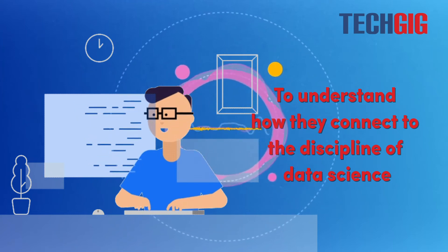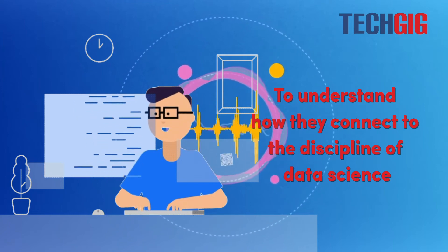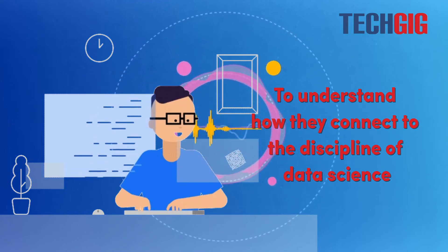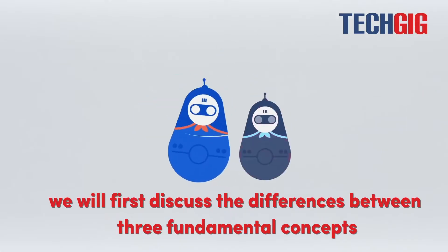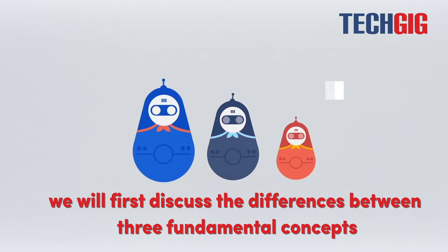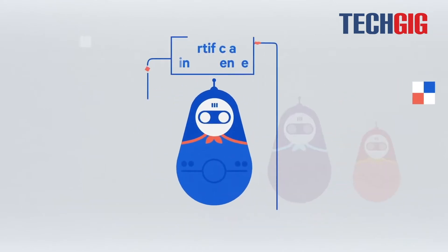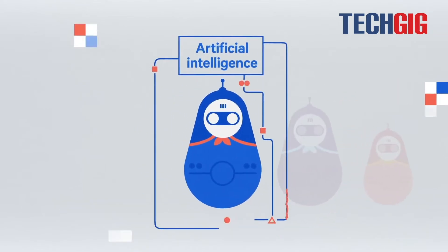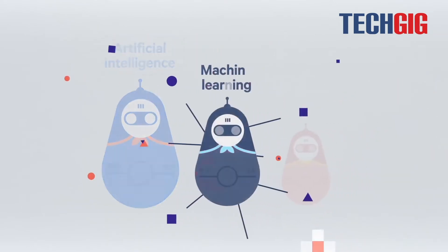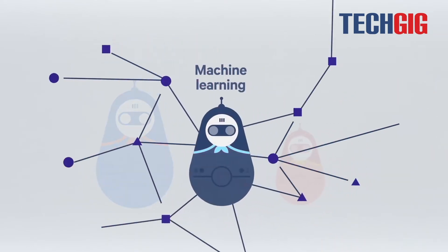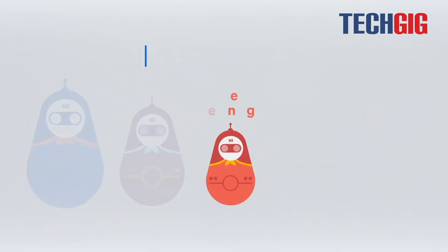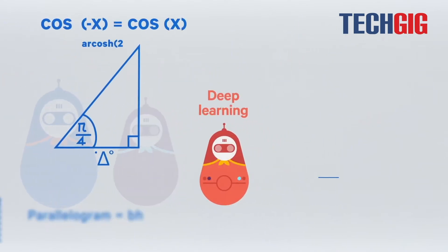To understand how they connect to the discipline of data science, we will first discuss the differences between three fundamental concepts: artificial intelligence (AI), machine learning (ML), and deep learning (DL).